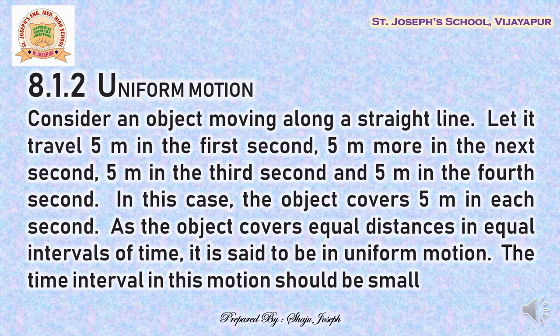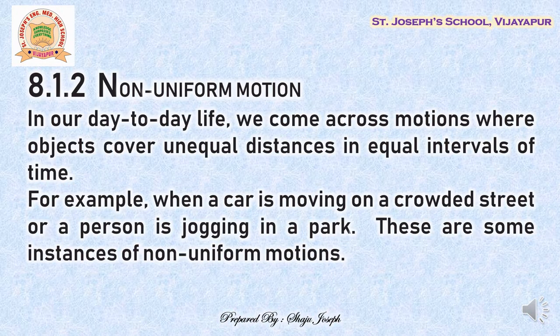We can define it as follows: the object covers equal distances in equal intervals of time, and we say the body is undergoing uniform motion. We have to keep in mind that the time interval taken should be very small. If we take a larger interval, we will be talking about average movement, not the particular uniform motion at that given instance.